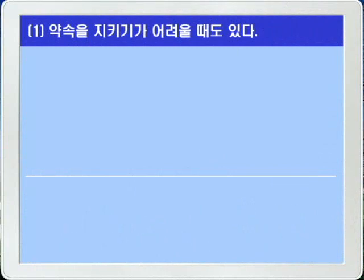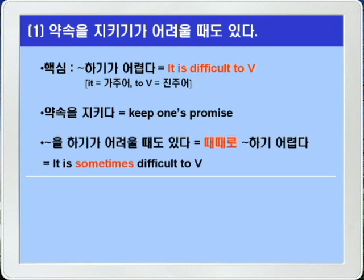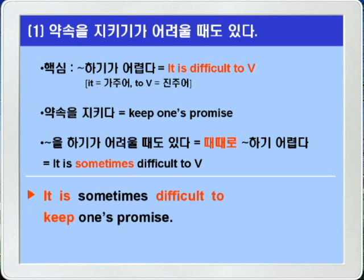장문 연습 1번. 약속을 지키기가 어려울 때도 있다. 뭐뭐 하기가 어렵다 이럴 때 'it is difficult to 부정사'를 씁니다. 약속을 지키다는 keep one's promise, 약속을 어기다는 break one's promise입니다. 때때로라는 sometimes를 집어넣으면 됩니다. 정답: 'It is sometimes difficult to keep one's promise.'